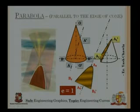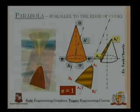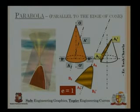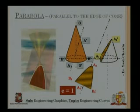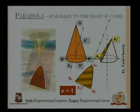Next is the parabola. For a parabola, the cutting plane has to be parallel to the slant edge of the cone. This is depicted by the red line in the 3D figure. The plane must be parallel to the slant side of the cone.